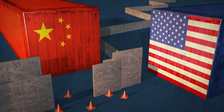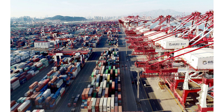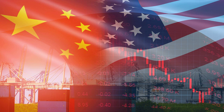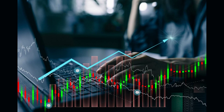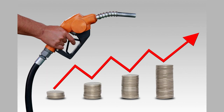The turning point came in 2018 when the Trump administration launched a full-scale trade war against China. It started with the imposition of tariffs on billions of dollars worth of Chinese goods, targeting industries such as steel, aluminum, and technology. China retaliated by imposing its own tariffs on American products, leading to a tit-for-tat escalation. The trade war not only affected the two nations directly involved, but also had ripple effects throughout the global economy. Supply chains were disrupted, stock markets fluctuated, and businesses faced uncertainty. The impact was felt by consumers as well, with prices of certain goods increasing due to the tariffs.